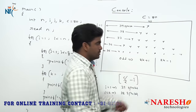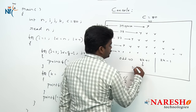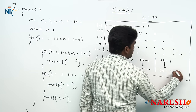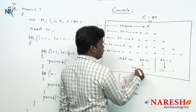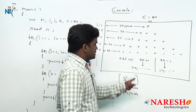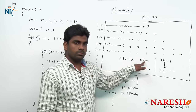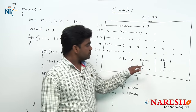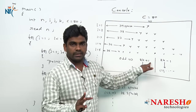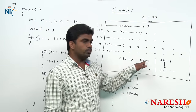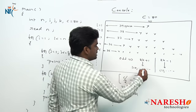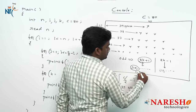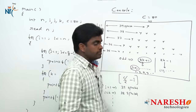When i starts at 0, we use 2k plus 1. When i starts at 1, we use 2k minus 1. For 2k plus 1 with k starting at 0: substituting k=0 gives 2×0+1=1; k=1 gives 2×1+1=3; k=2 gives 2×2+1=5. This produces the sequence 1, 3, 5, 7, and so on.